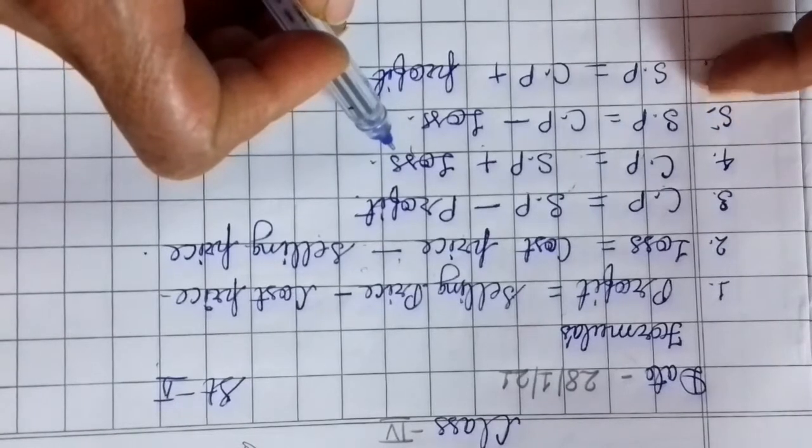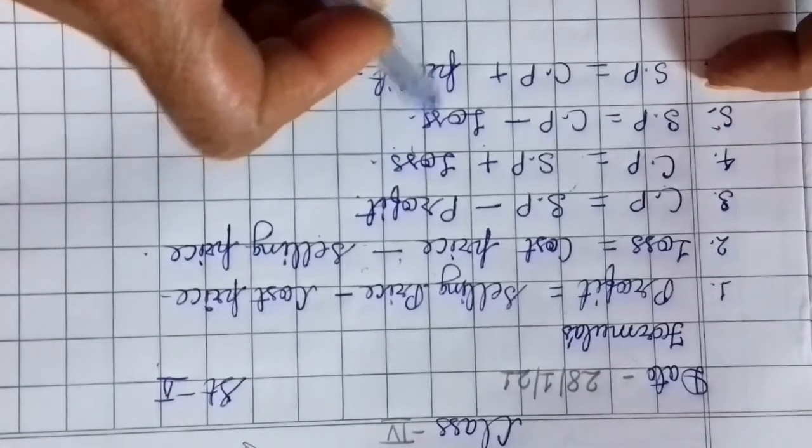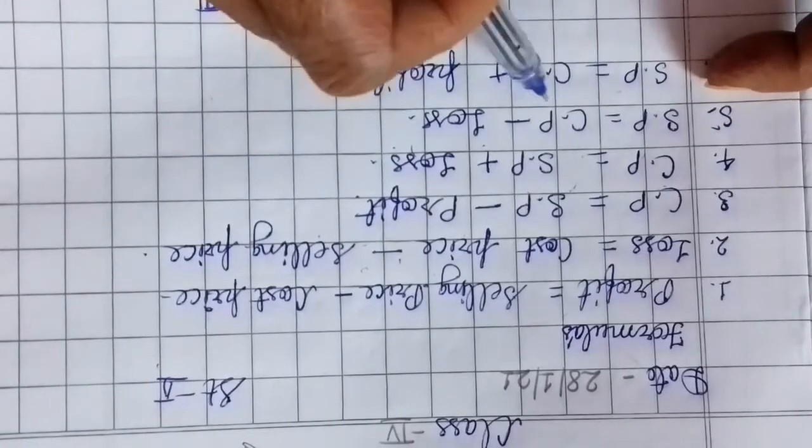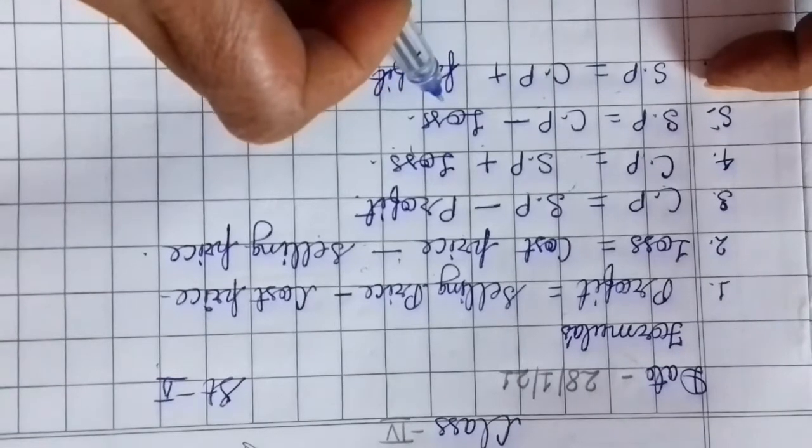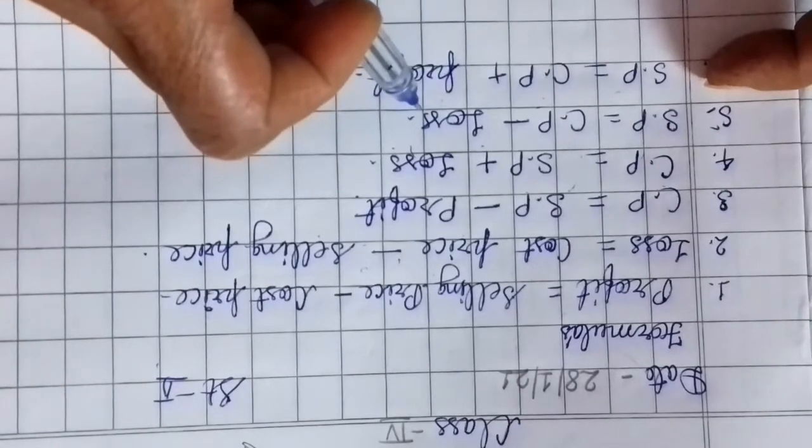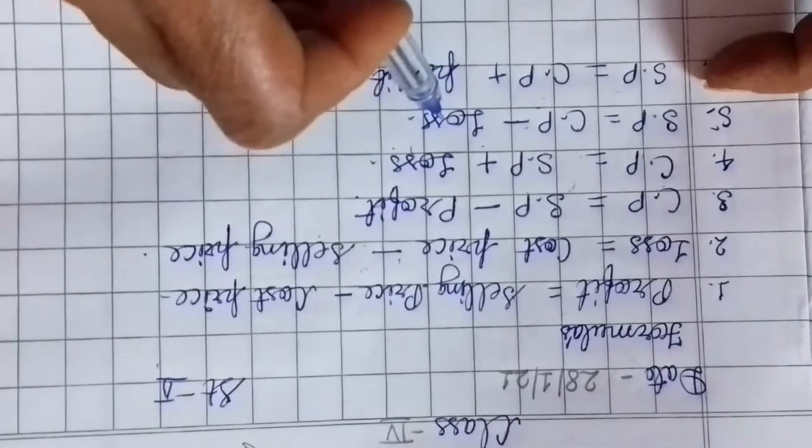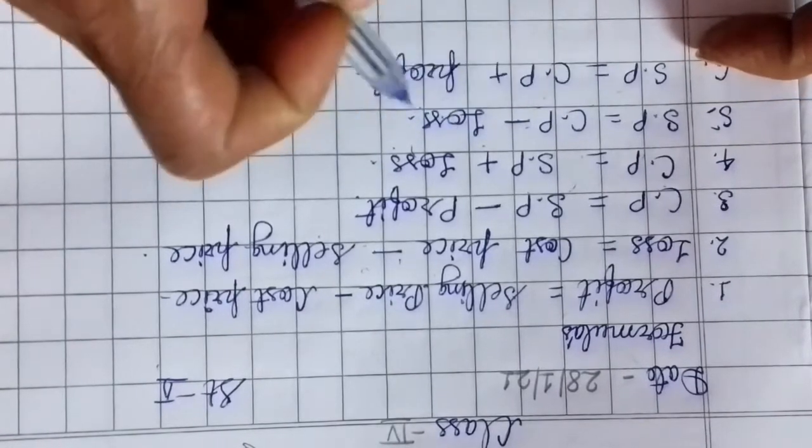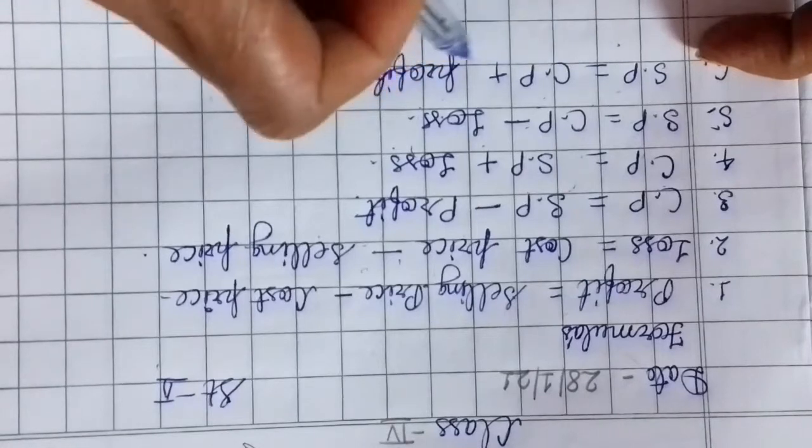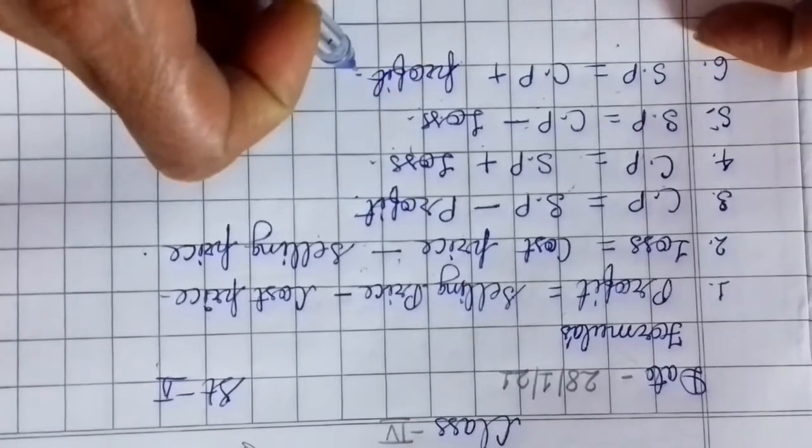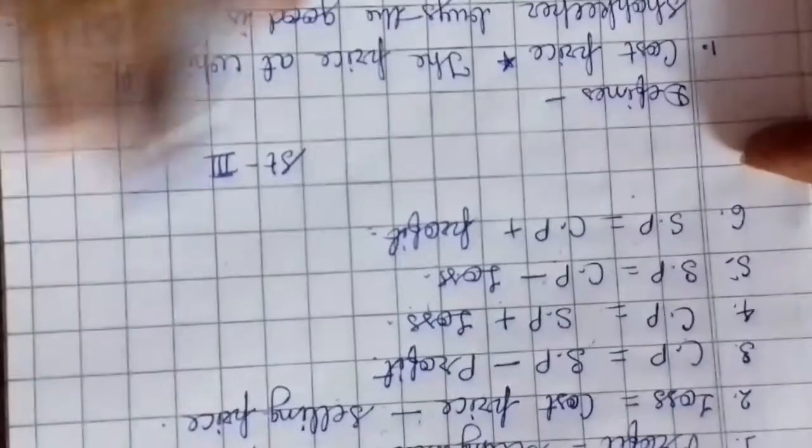By adding to Selling Price we get CP. Then SP formulas: SP equals CP minus Loss. If we minus loss from CP we get SP. SP equals CP plus Profit. If we add profit to CP, we also get SP. Then Third Stage defines...